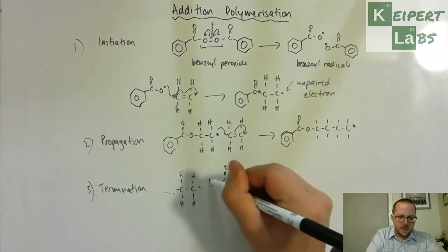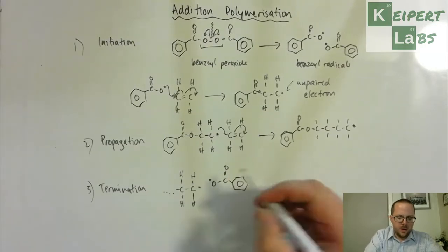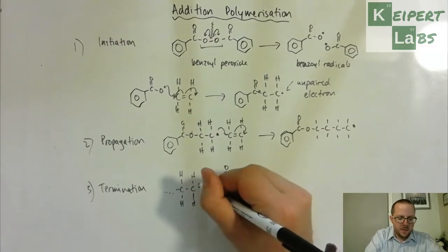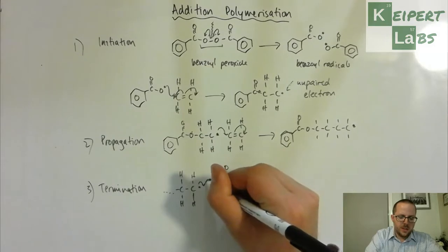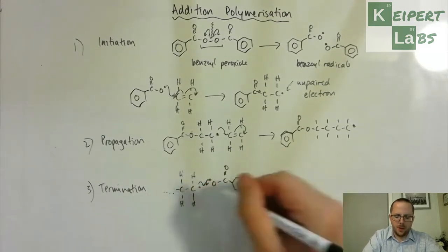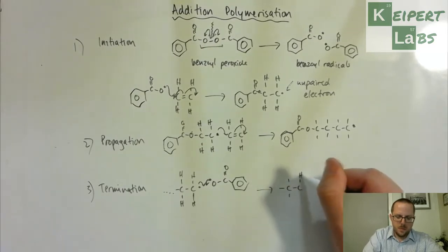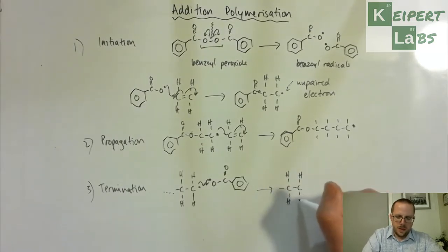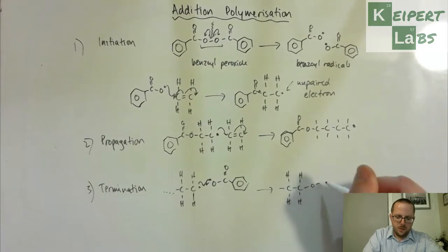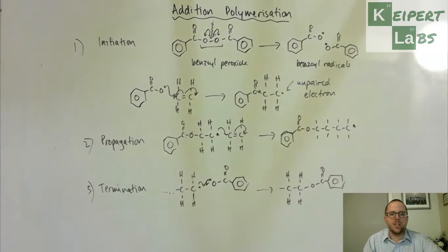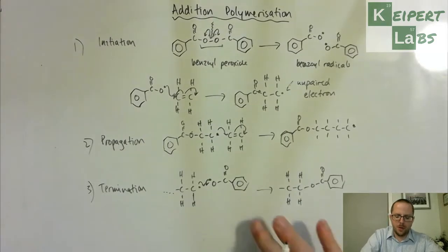So there's our, there's our what we would call our terminating radical, so each one, each of these unpaired electrons comes together to form a covalent bond which terminates the chain or caps it off at the end. So we get the radical and then no further reaction can take place. So the process has terminated.